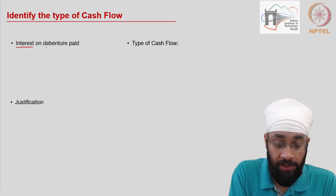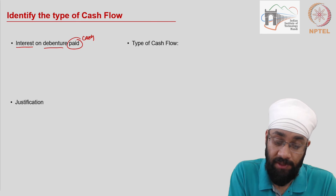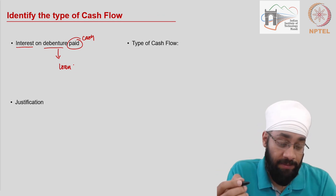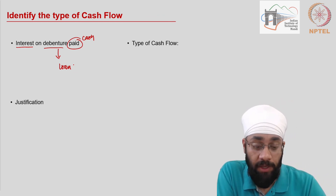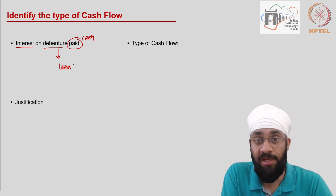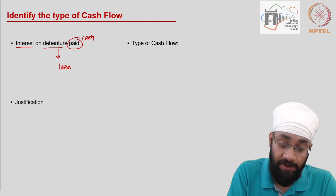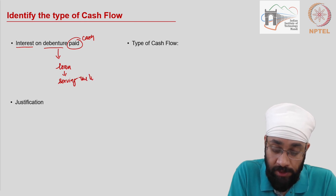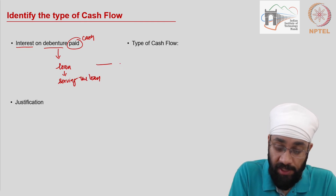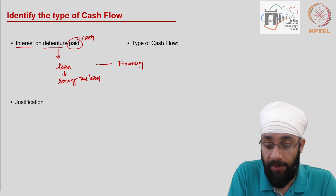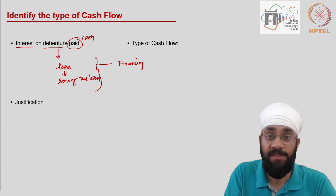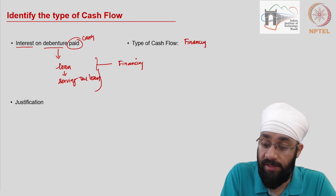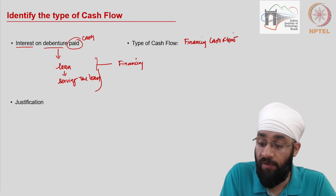Interest on debentures paid: cash is involved. A debenture is essentially a loan raised from the public — similar to shares but it is debt, not share capital. Now you are servicing that loan. Since taking the loan was a financing activity, servicing it is also a financing activity. This is therefore a financing cash flow, consistent with the finance cost category seen in the income statement.